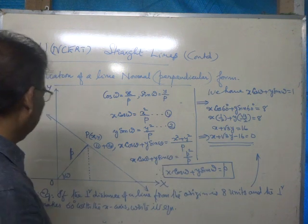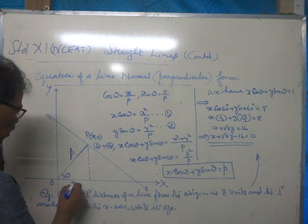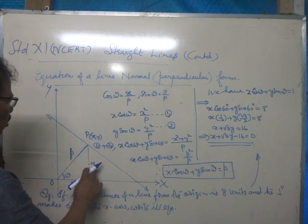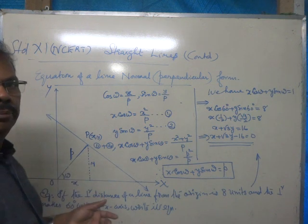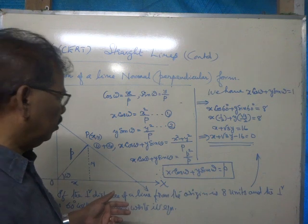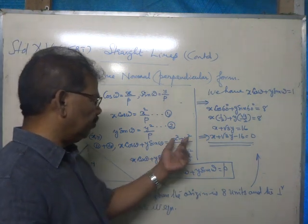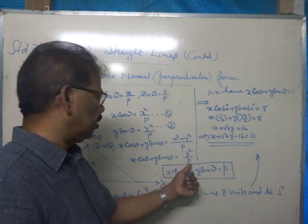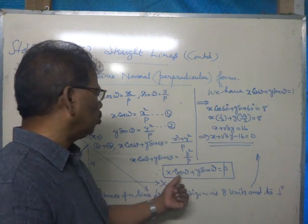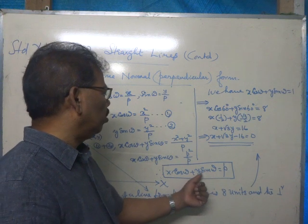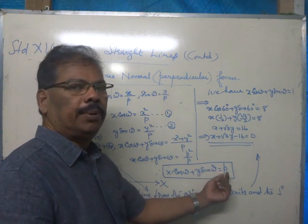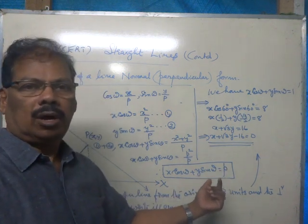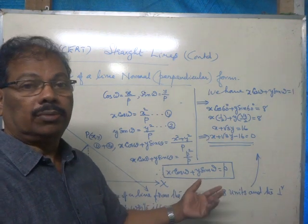Now, from the figure, this distance is x and this one y. x squared plus y squared will be equal to p squared by Pythagoras theorem. That is, instead of x squared plus y squared we can write p squared, p squared by p is p itself. Therefore, we get x cos omega plus y sin omega is equal to p. This is known as the normal form of equation of a line.